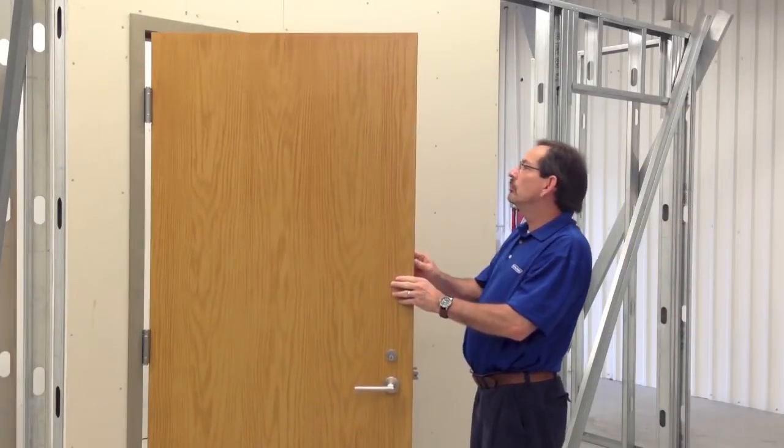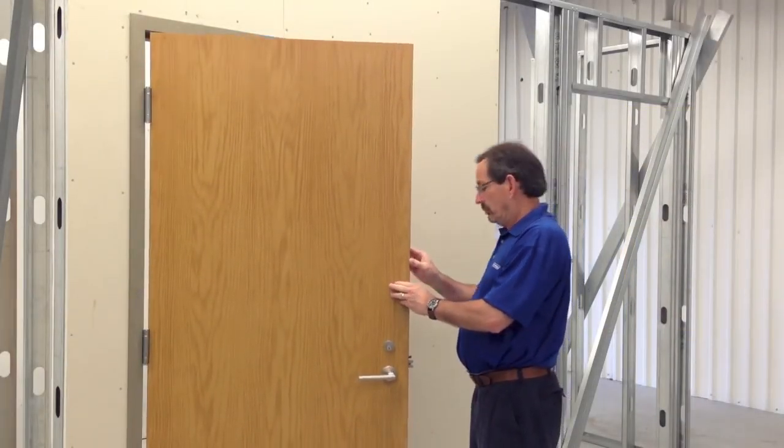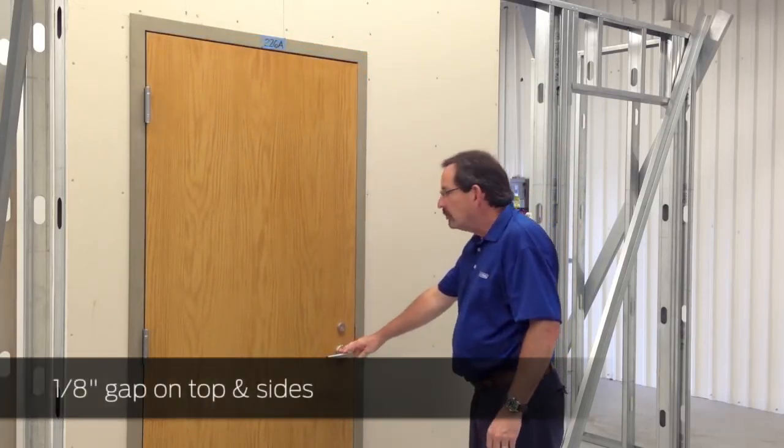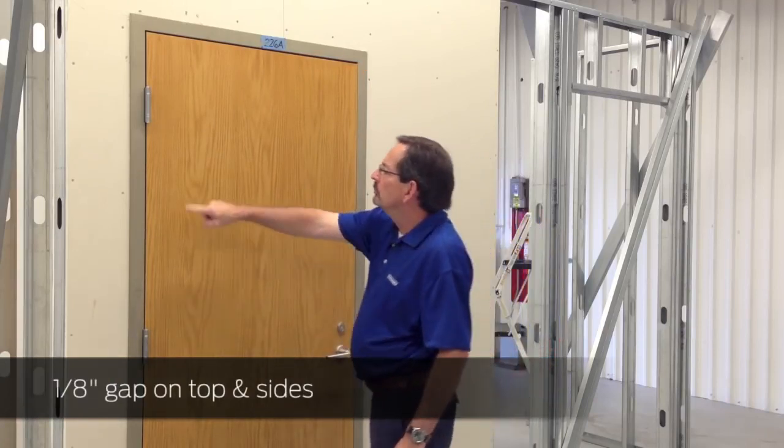Ensure the door swings freely, fits into the frame without binding, and that any latching hardware engages easily. There should be a 1 1/8 inch gap on the top and sides between the door and frame.